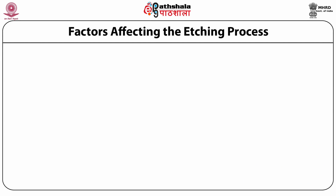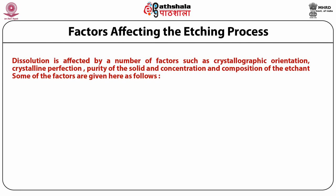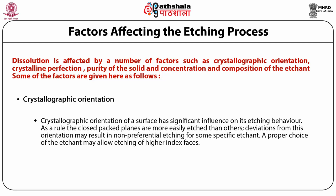Factors affecting the etching process: dissolution is affected by a number of factors such as crystallographic orientation, crystalline perfection, purity of the solid, and concentration and composition of the etchant. Number one, crystallographic orientation: crystallographic orientation of a surface has significant influence on its etching behavior. As a rule, the close-packed planes are more easily etched than others. Deviations from this orientation may result in non-preferential etching for some specific etchant. A proper choice of the etchant may allow etching of higher index planes.